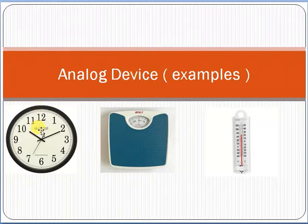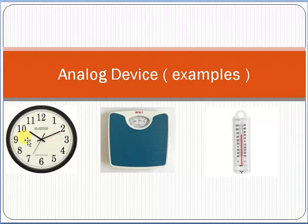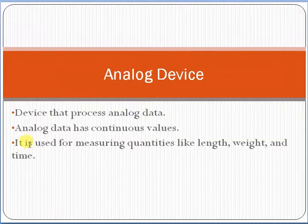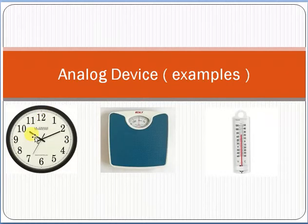For example, this clock is an analog clock, this weighing scale is analog, and this thermometer is analog. Why? Because if you see from here, they have continuous values — they are increasing or decreasing in a continuous manner. Just remember: analog devices have continuous values. So clock, weighing scale, and thermometer are examples of analog devices.